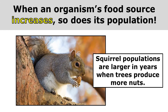We've been talking about what happens when we take away an organism's food source. But it's also true that when an organism's food source increases, so does its population. Squirrel populations are larger in years when trees produce more nuts, because they have more food, and so more squirrels can survive because there's more food for all of them to eat.